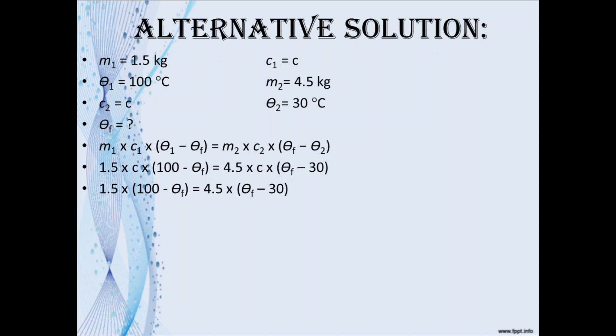Expanding brackets: 1.5 times 100 is 150, and we'll have minus 1.5θf and 4.5θf. On the other side, 4.5 times 30 is minus 135. Then we transpose and add: 150 plus 135 and 4.5 plus 1.5. We get 285 equals 6θf, so θf would be 285 divided by 6, which gives you the same answer of 47.5 degrees Celsius.